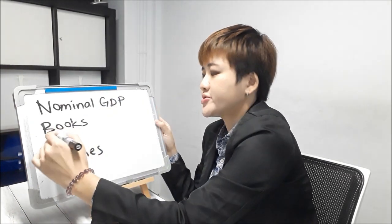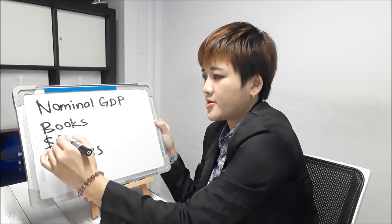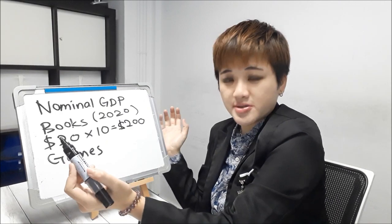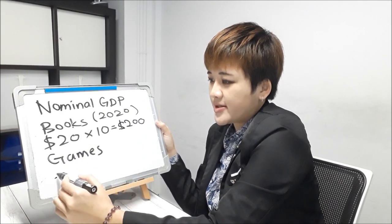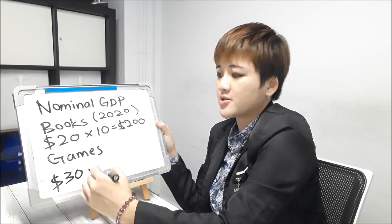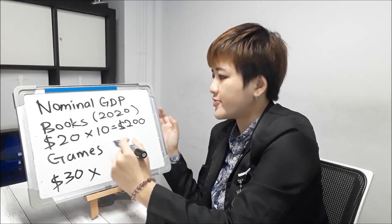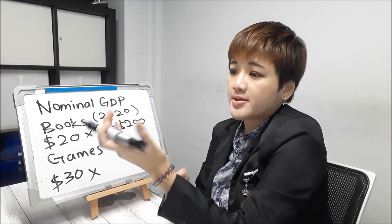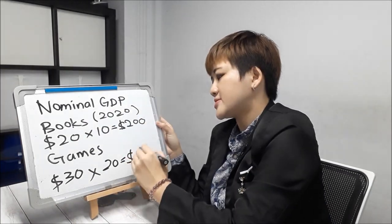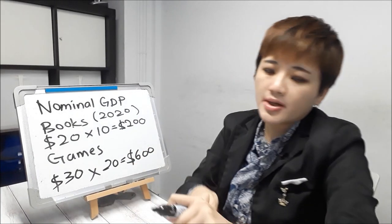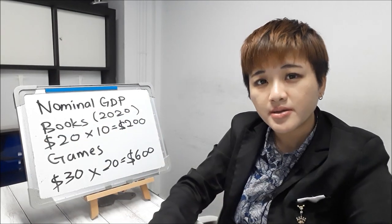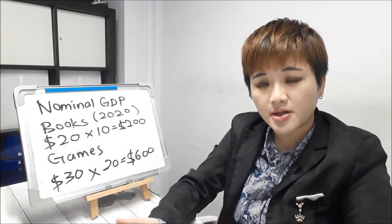Let's say their books sell for about $20. So this year, $200 worth of books is produced in the country. And their games sell for, let's say, $30 — because, you know, GTA is expensive. And because the country has more game addicts than bookworms, they're going to produce more. So let's say $600 worth of games. $200 plus $600 — total nominal GDP is $800.